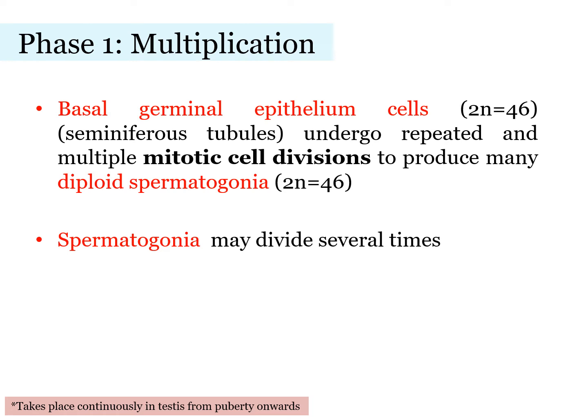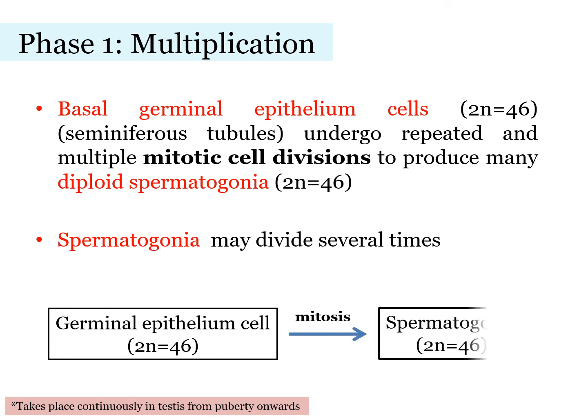Let's look further at the process of spermatogenesis. Always remember, these phases only begin when a human male reaches sexual maturity, as it requires a high concentration of testosterone. There are four phases in spermatogenesis. The first one is multiplication. In this phase, basal germinal epithelium cells, which are in the seminiferous tubules, undergo repeated mitosis, producing many diploid spermatogonia.